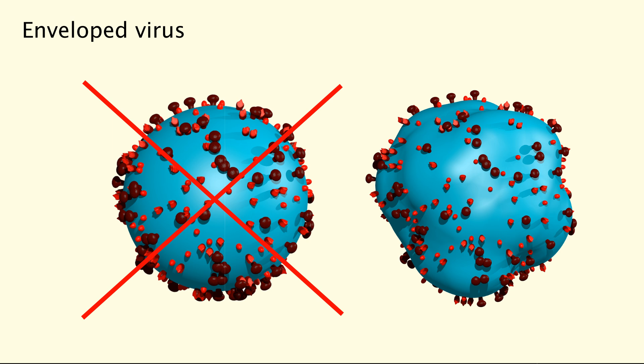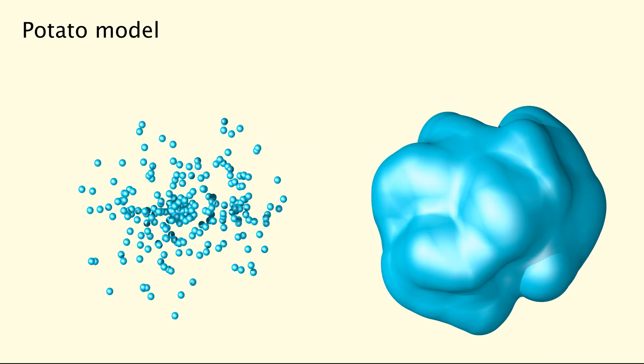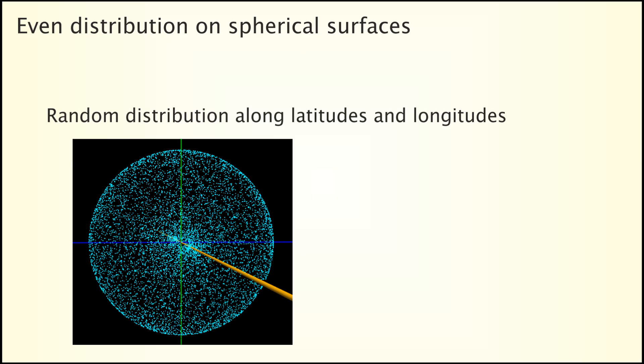How can we model such random potato-like structures? The potato-like shape is not very difficult and I already published a video about this. You can simply use a blob produced from a number of spheres distributed in a random spherical way.